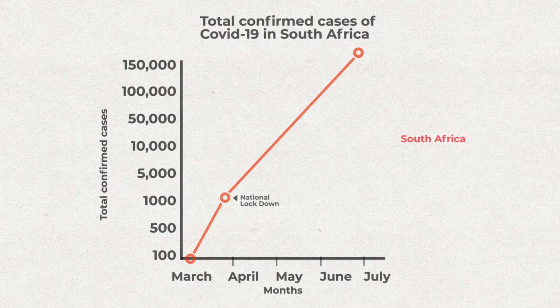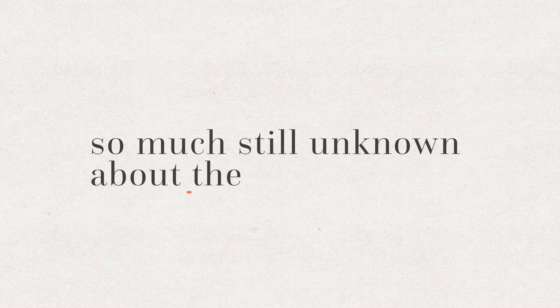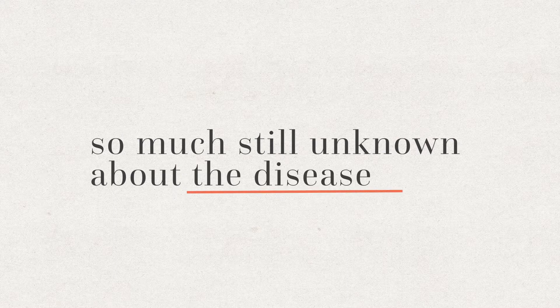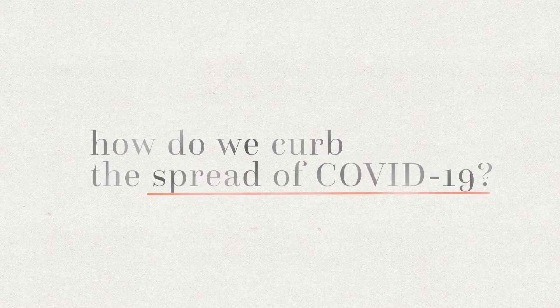reaching 150,000 by the end of June. In light of these ever-increasing numbers, and with so much still unknown about the disease, the most important question is, how do we curb the spread of COVID-19 and prevent future outbreaks?